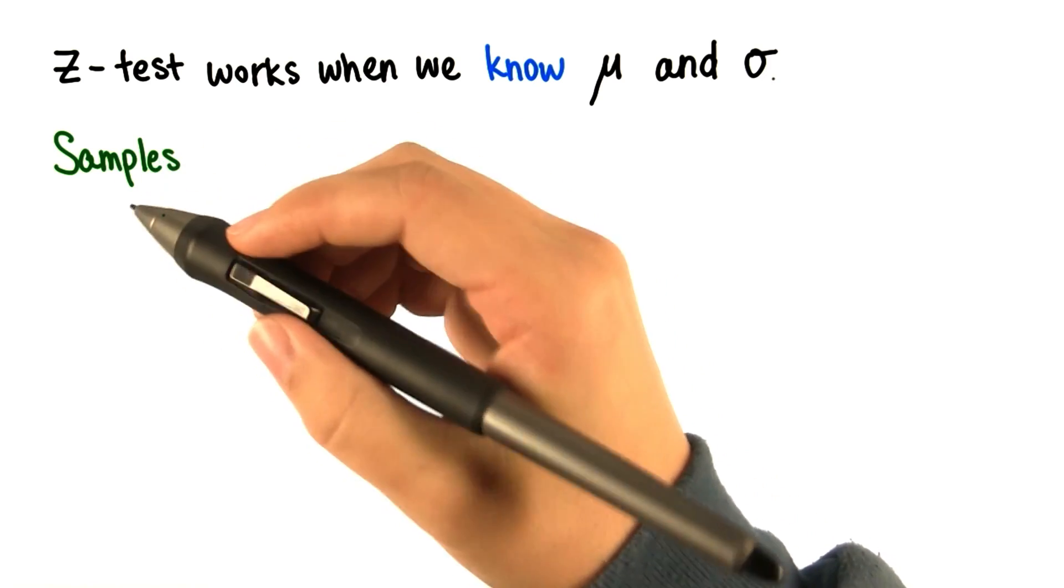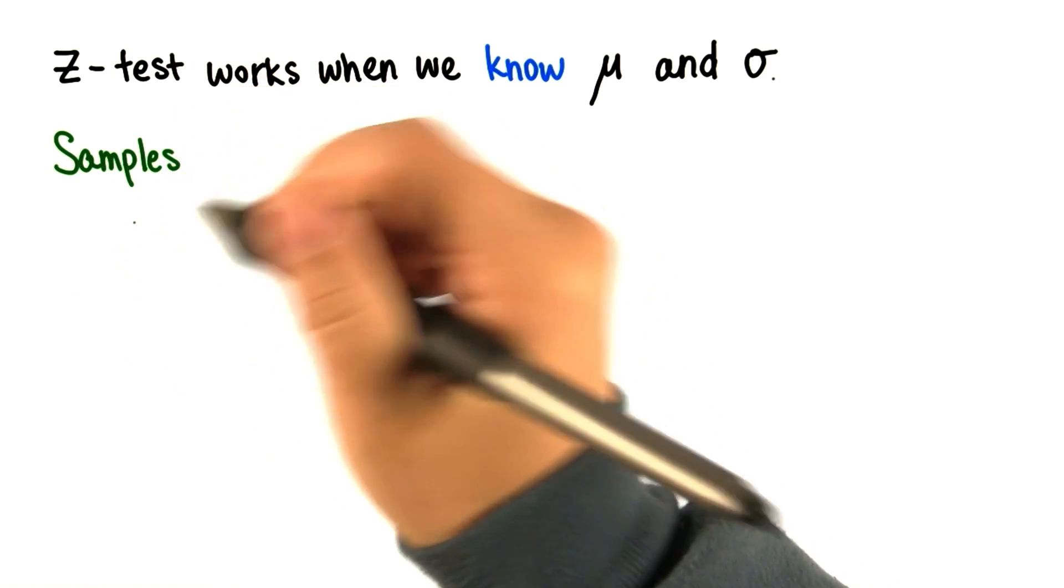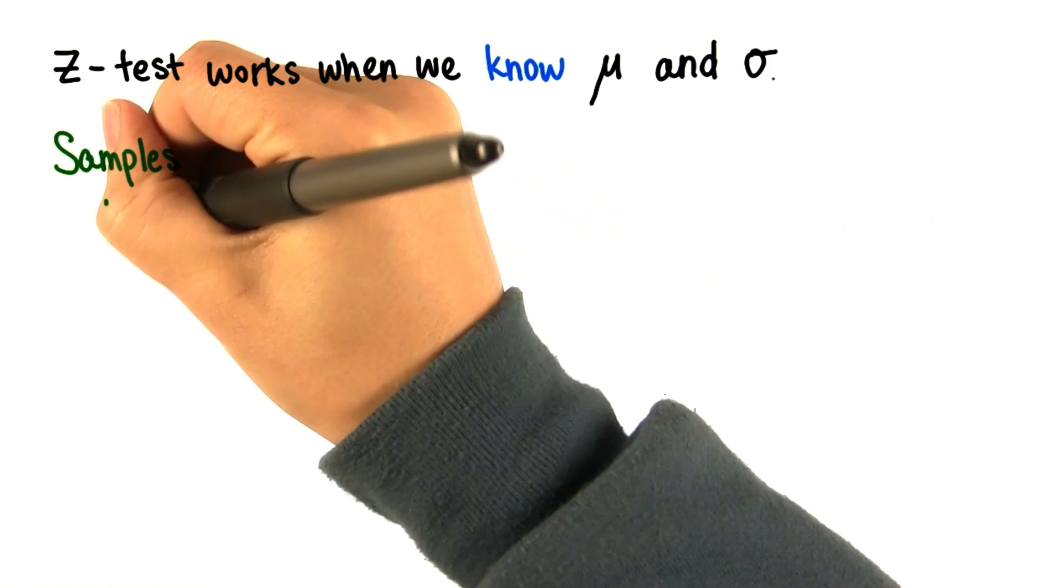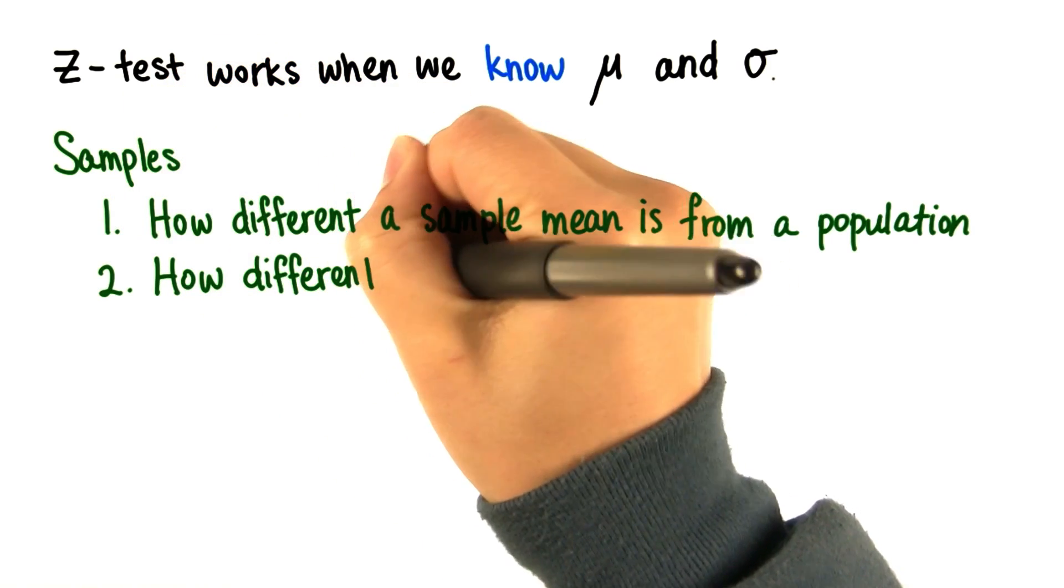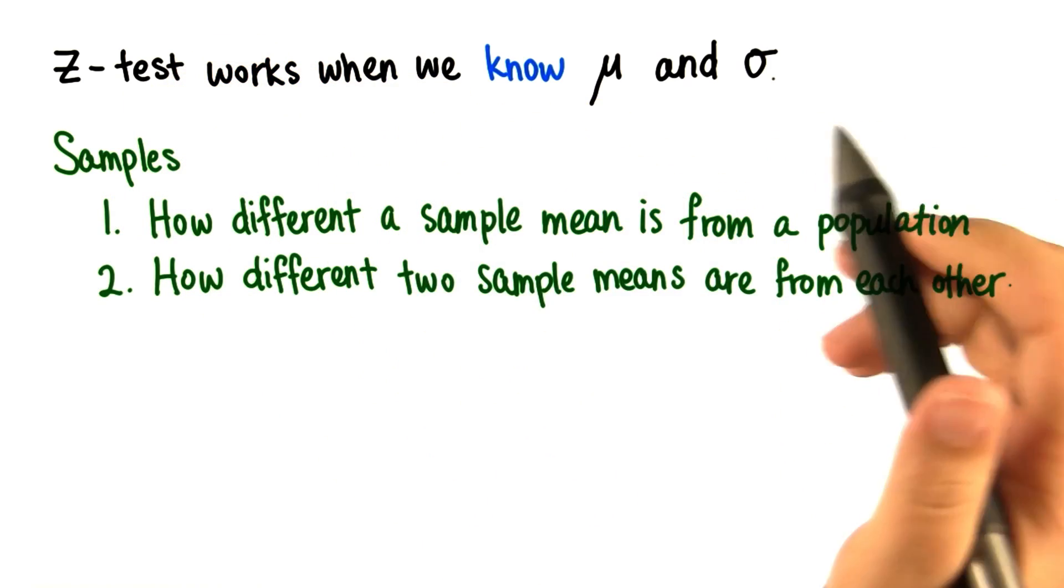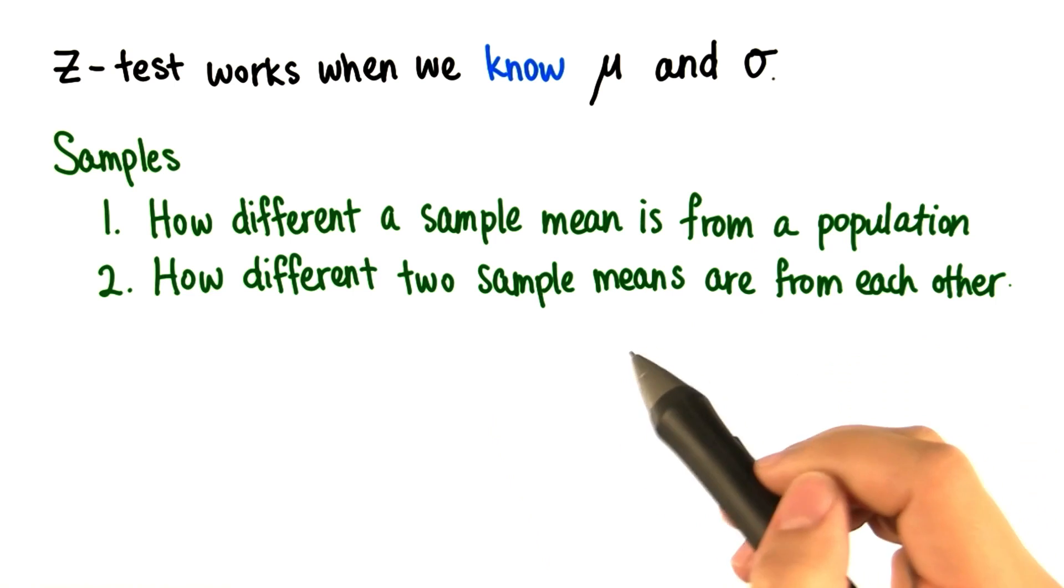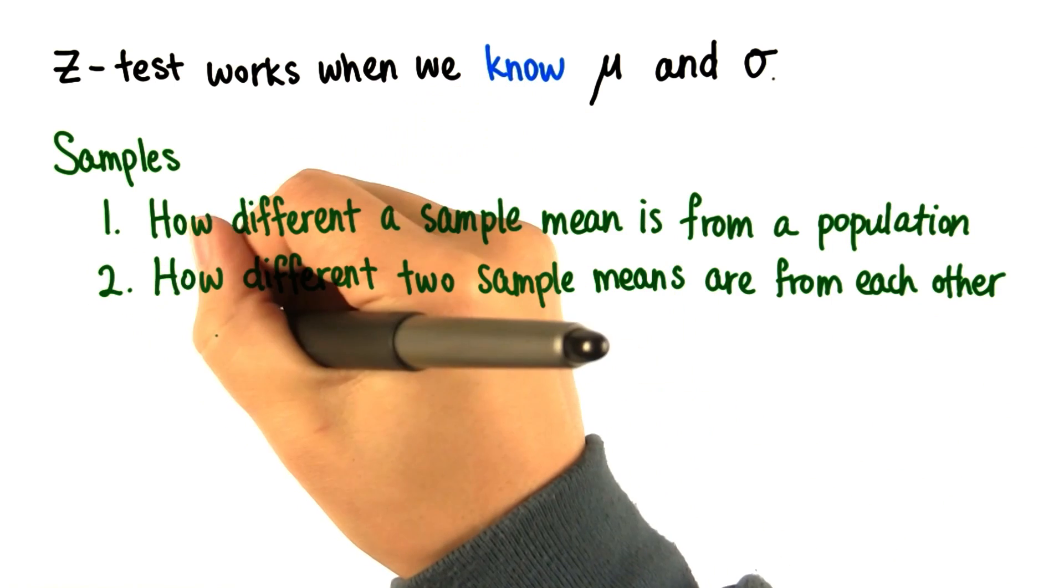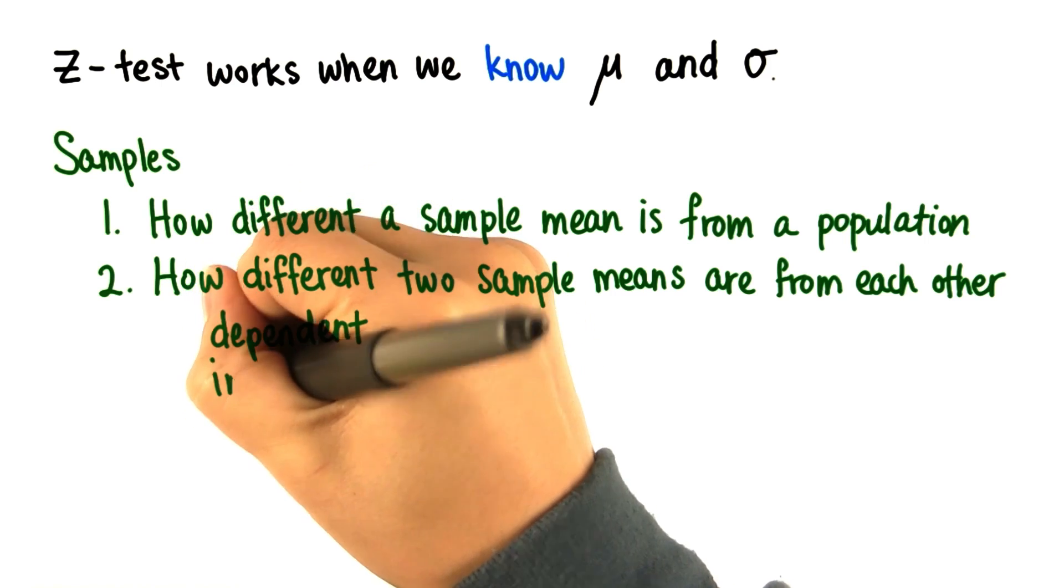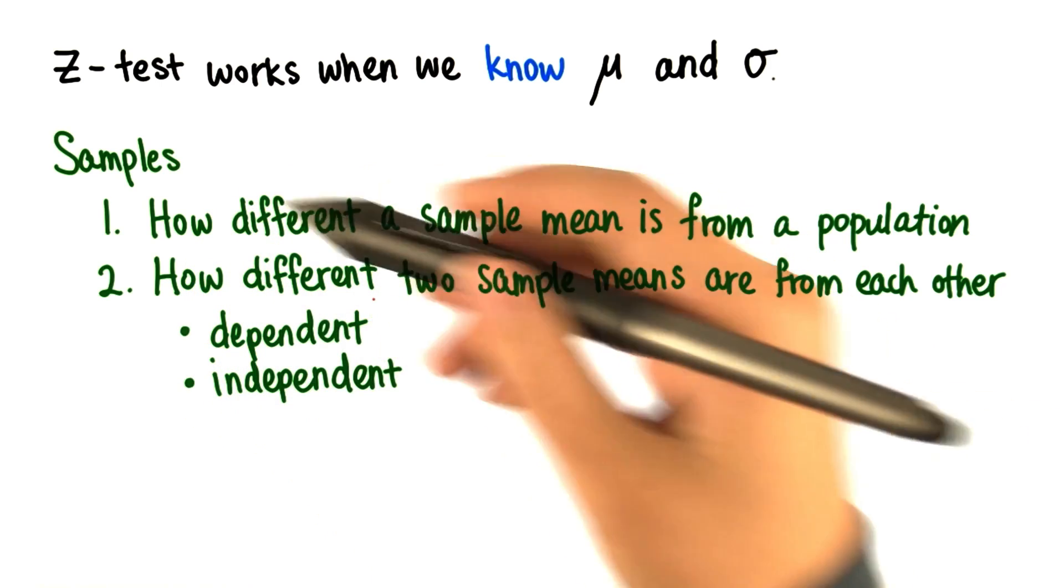In the next two lessons, we'll use samples to find out how different a sample mean is from a population, and how different two samples are from each other. Out of all the measures of center, we usually use the mean. Now, the two samples we're comparing in this case can either be dependent or independent. We'll go over these differences later.